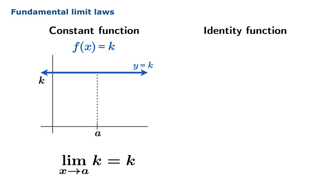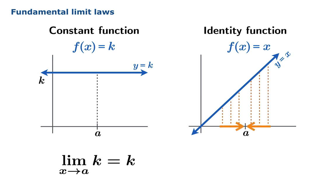The identity function is not much more complicated. It's given by the formula f of x equals x. So if we want to examine the limit of this function as x approaches a, we'll notice that the value of the function is just x. So as x approaches a, the value x approaches a. And so we have our second limit law.